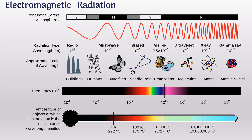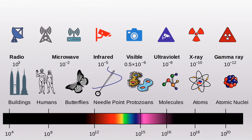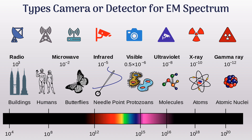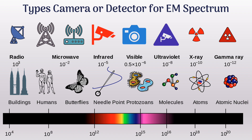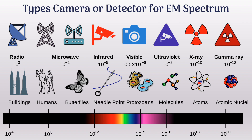Each region of the electromagnetic spectrum has its own application, and application requires that the radiation be detected. The visible spectrum can be recorded using ordinary analog and digital cameras. Infrared cameras are used in night vision detection. Ultraviolet cameras detect UV rays emitted by an object to confirm its presence. Radio waves and microwaves are detected using radio towers and microwave antennas, respectively. Finally, X-rays and gamma rays — which are highly ionizing radiations with very high energies — are detected using specially made detectors.